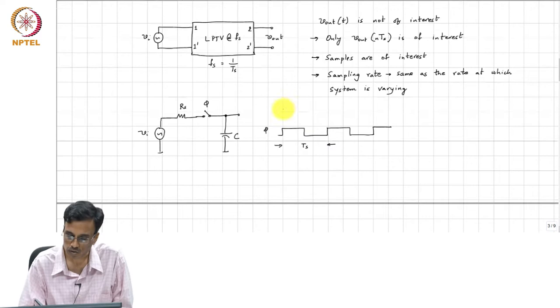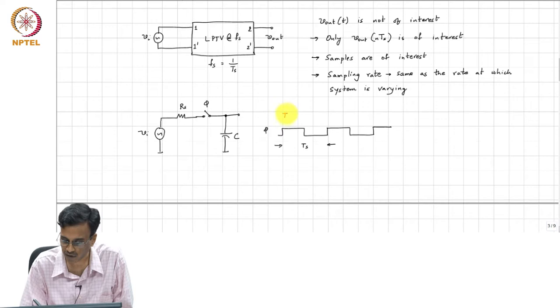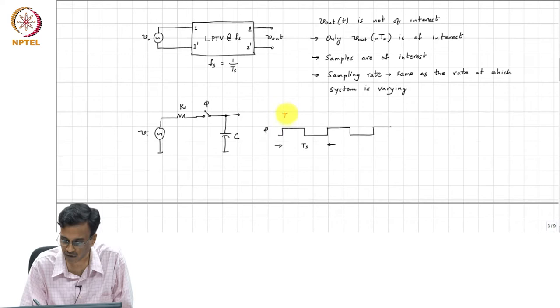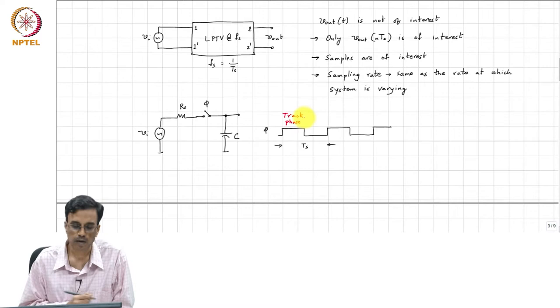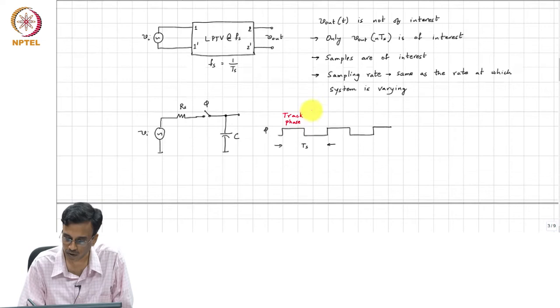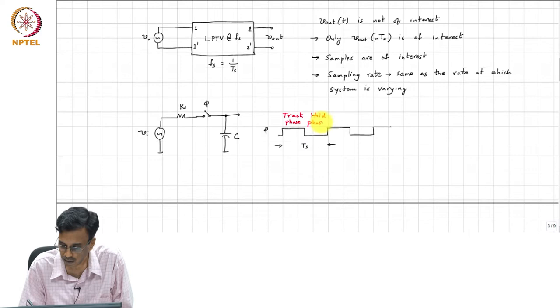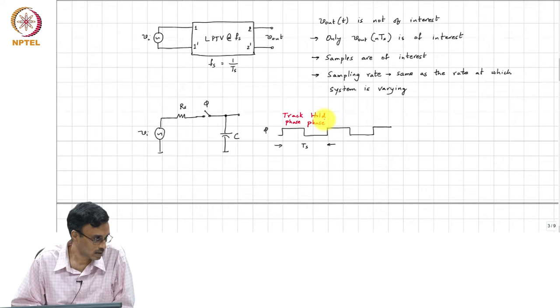So, the period during which the switch is closed is called the track phase. And the period or the fraction of the period when the switch is open is called the hold phase.